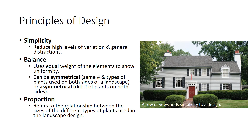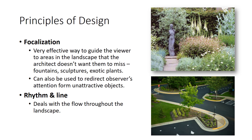Proportion is the landscape design principle that refers to the relationship between the sizes of the different types of plants used in a landscape design. Proportion is not only used with respect to the plants in the landscape, but also with respect to their relationship with inanimate objects in the landscape. For example, large trees should not overshadow a small house. Focalization is a landscape design principle that creates an accent in a particular arrangement. The landscape architect creates focal points in the landscape to direct where people look. Focalization is a very effective way to guide the viewer to areas in the landscape that the landscape architect does not want them to miss, such as fountains, sculptures, and exotic plants.